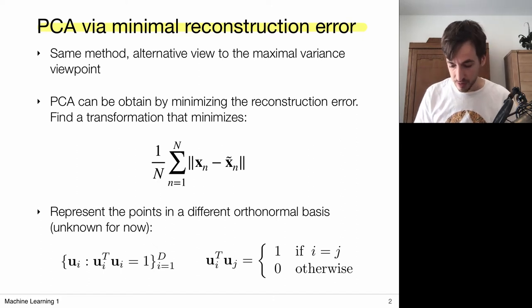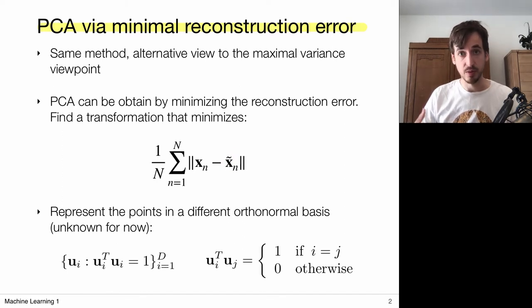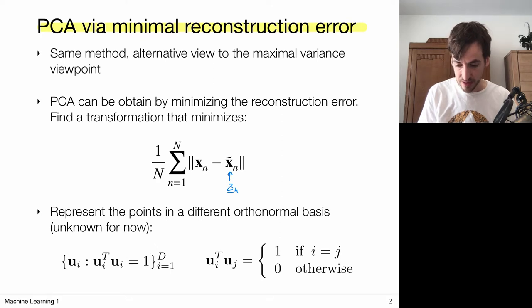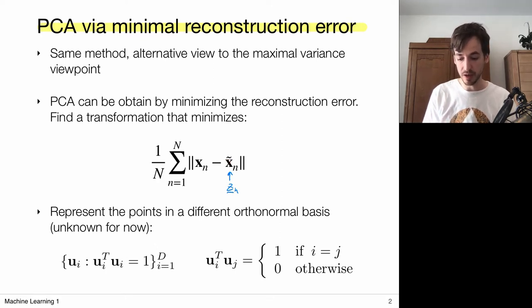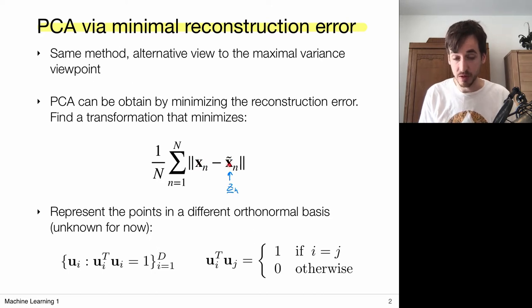The idea is as follows: we have a true data point and we have a generated data point which is generated from some low-dimensional latent variable. We can think of it as having this latent variable set which generates an approximate data point, and the set m will be of lower dimension than my true data point. So I'm probably not going to exactly represent my true data point — this is going to be an approximation — and we want to minimize this loss.